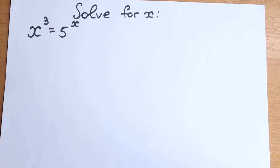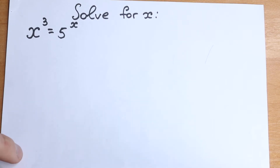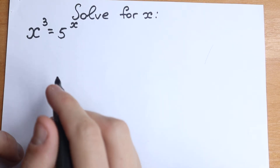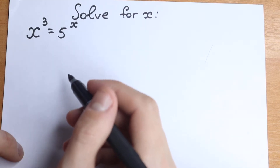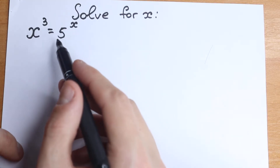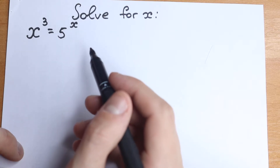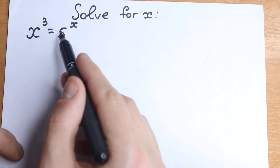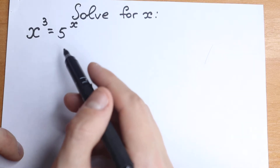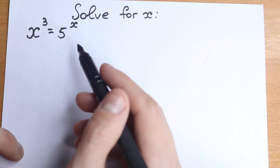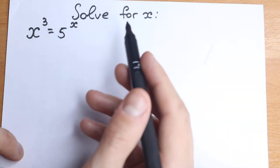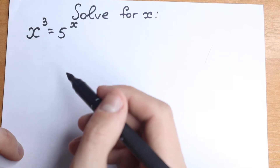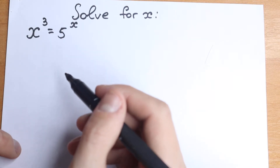Hello everyone! Happy to see you here. In this video we are going to solve a really interesting exponential equation and I hope you'll enjoy this solution. On the first side this is a very easy question — we have x, we have no huge numbers, we have 5 and 3s. But we need to know really important steps, because this is not an easy question — we need to know 3 main steps. I'm going to show you these steps in just 5 minutes.